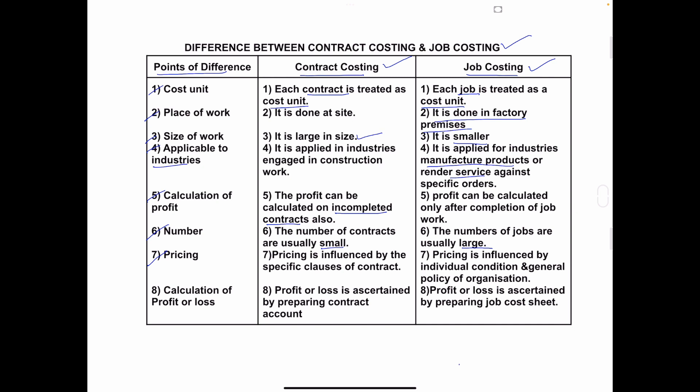Seventh: Fixing the Price. In contract costing, the price is fixed on the basis of the clauses of the contract — for some contracts they invite tenders and quotations, as you may have seen in newspapers. So prices are fixed based on contract clauses or through tender and quotation. In job costing, prices are fixed based on individual conditions and the general policies of the organization, according to each specific job or order.